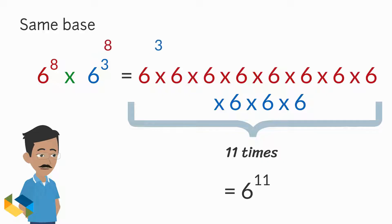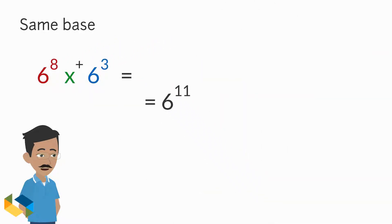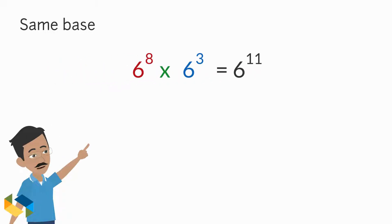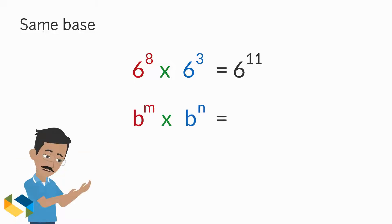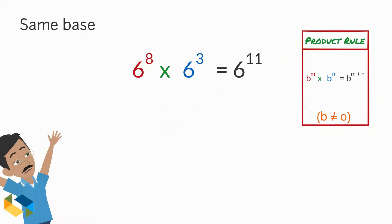Eight plus three is eleven. The result is nothing but the addition of the individual exponents. In variable form, this is: B raised to the power M multiplied by B raised to the power N equals B raised to the power M plus N. This is called the product rule.